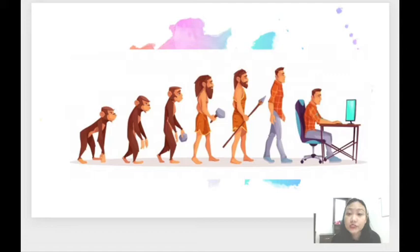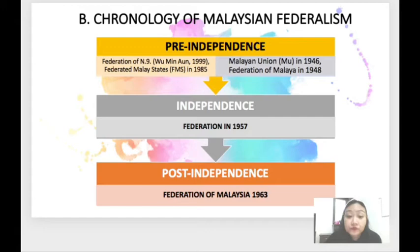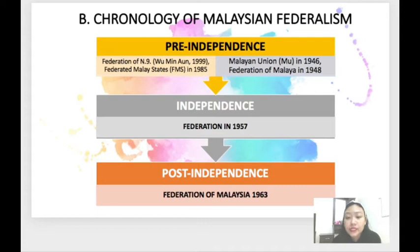Let's move on to the historical chronology of Malaysian Federalism. From the chart here, I have divided the chronology into three periods: the pre-independence period, the independence period, and the post-independence period. The earliest form of federalism in Malaysia was said to be Negeri Sembilan's loose arrangements of nine different localities under the Yam Tuan Besar. The office of the Yam Tuan was seen as the unifying symbol, but such an arrangement was not qualified to be called a federal system under the modern definition of federalism.